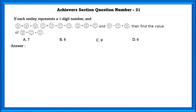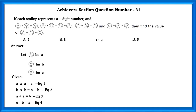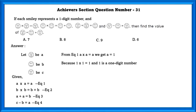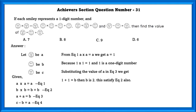Question number 31. Each smiley represents a one-digit number. Find the value of a plus b plus c. Assigning smileys as alphabets a, b, and c: from equation 1, a into a equals a, so a equals 1 because 1 into 1 equals 1, which is a one-digit number. Substituting a in equation 3, we get 1 plus 1 equals b, so b equals 2. This satisfies equation 2 also: 2 into 2 equals 2 plus 2.